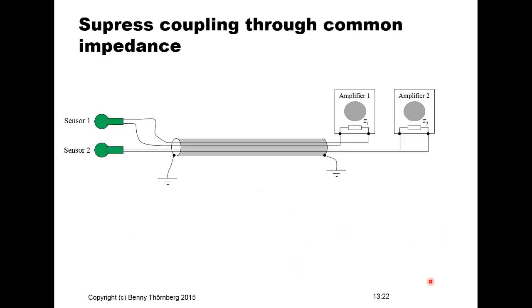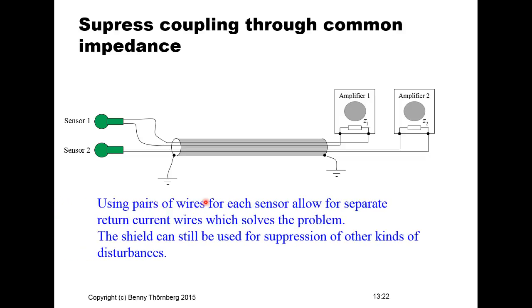Using separate pairs of wires for each sensor provides separate return current paths, solving the common impedance problem. The shield connected to ground at both ends then suppresses both inductive and capacitive coupled disturbances simultaneously.